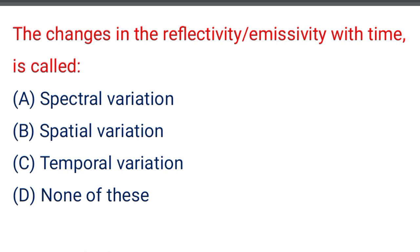Next question: the changes in the reflectivity and emissivity with time is called — option A: spectral variation, option B: spatial variation, option C: temporal variation, option D: none of the above. The correct answer is option C: temporal variation.